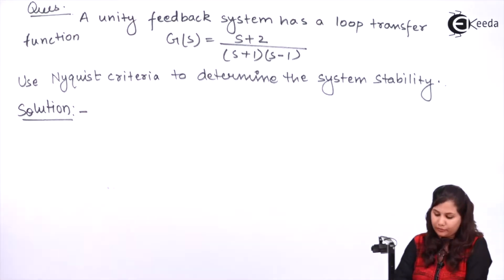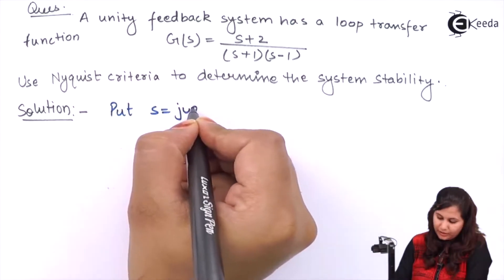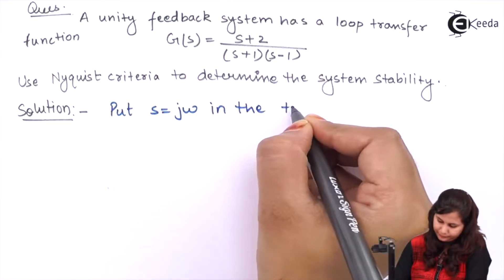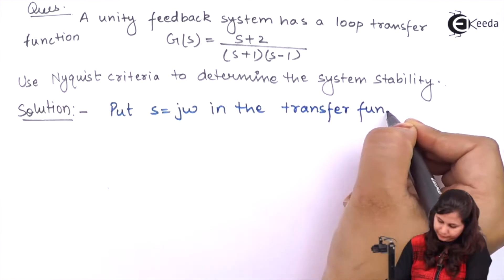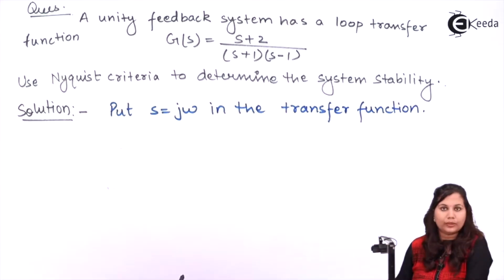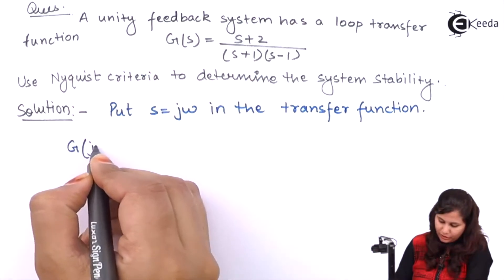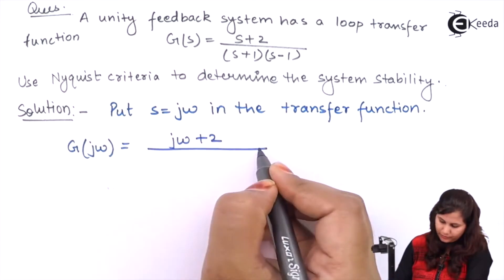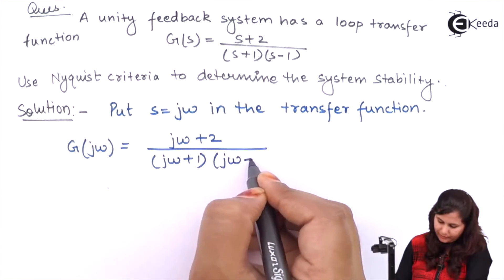In the first step, to draw the Nyquist plot, we will put s = jω in the transfer function. So putting s = jω, we have G(jω) = (jω + 2) / ((jω + 1)(jω - 1)).